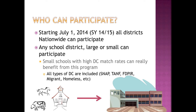So who can participate? Starting July 1, in the 2014-15 school year, all districts nationwide can participate — any school district, large or small. Large districts benefit from reduced administrative burden of not collecting and processing applications. But small schools can also really benefit; for example, schools near a reservation with a high FTPIR match rate, or even schools as small as 10 or 15 students where the majority are DC matched.